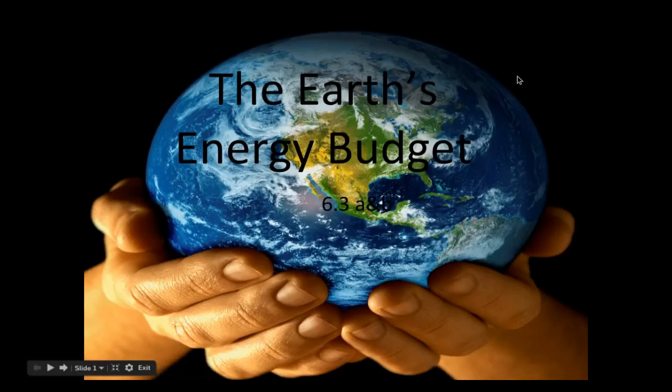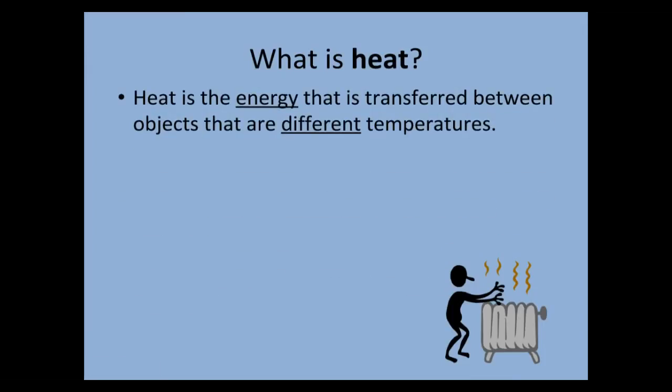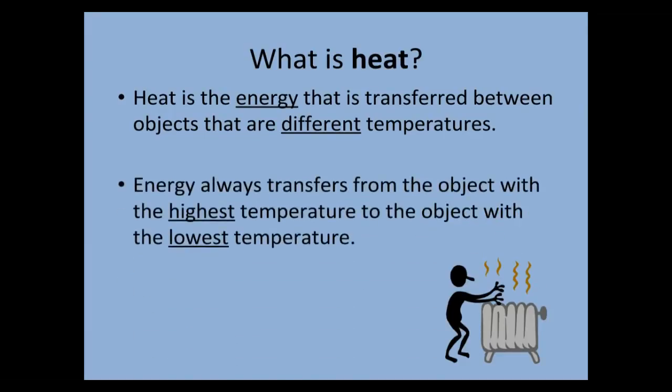Today, we're going to be talking about the Earth's energy budget and heat transfer. Heat is defined as the energy that's transferred between objects that are different temperatures. When heating something, energy always transfers from the object with the highest temperature to the object with the lowest temperature.